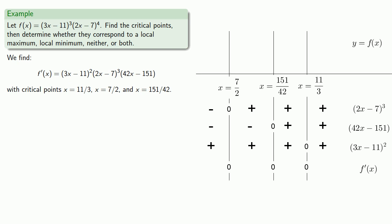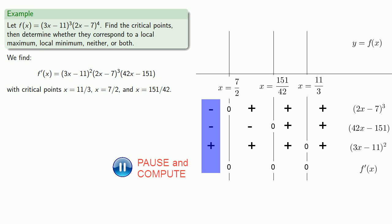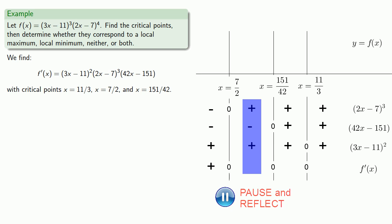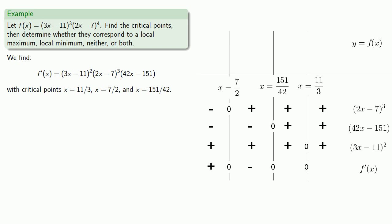We can now find the sign of f′(x) in each region. In the first region where x < 7/2: the first factor is negative, the second is negative, the third is positive, so f′(x) is negative. In the second interval between 7/2 and 151/42: the first factor is positive, the second is negative, the third is positive, so f′(x) is negative. At x = 151/42, f′(x) = 0. In the third region, the sign analysis gives f′(x) positive. In the fourth region, f′(x) is positive again.